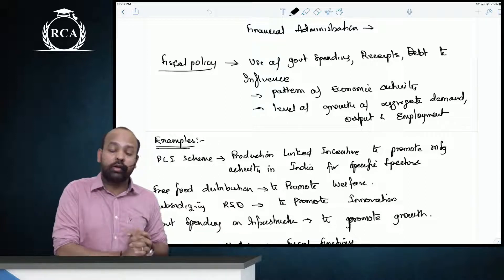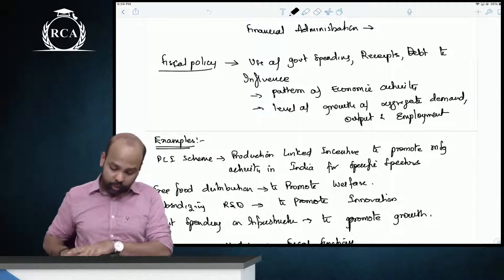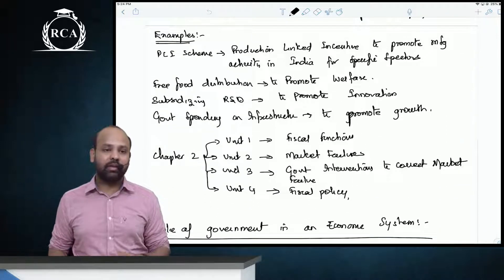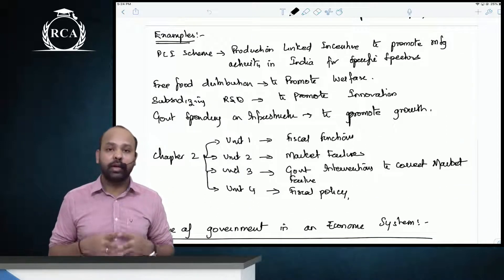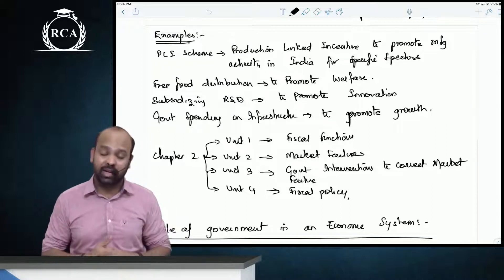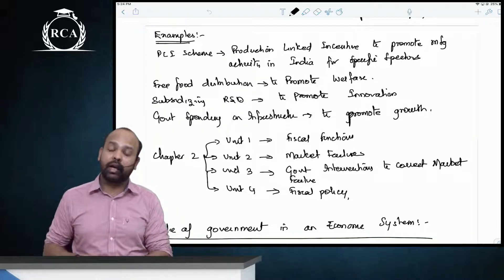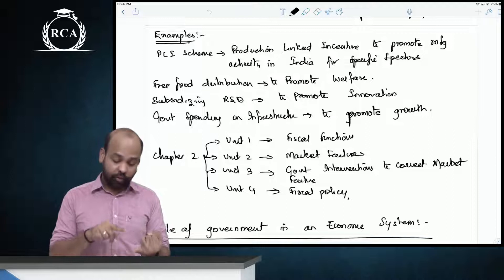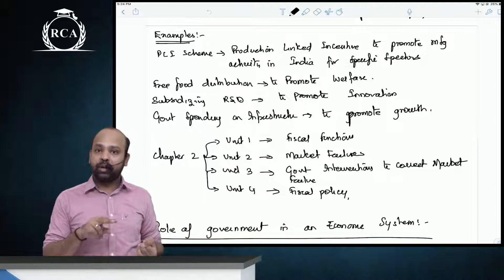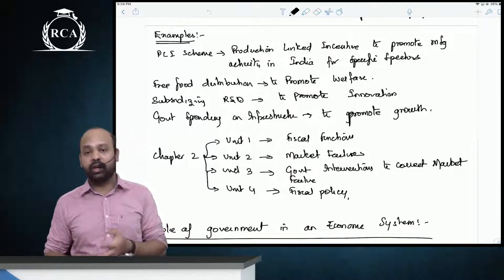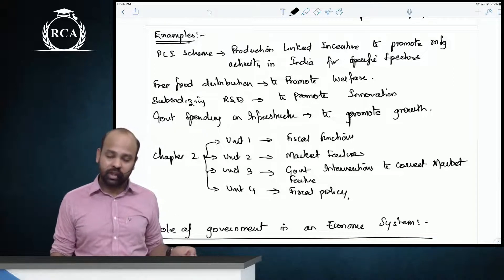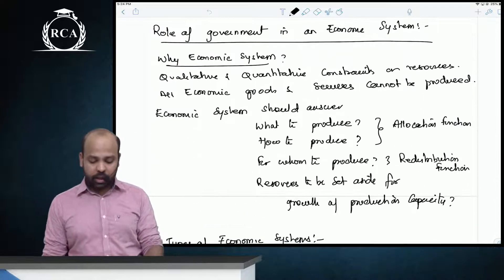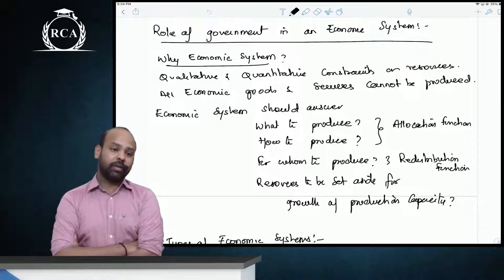Fiscal policy is used to influence the pattern of economic activity and the overall level of aggregate demand, output, and employment in a country. Examples include the Production Linked Incentive scheme, subsidized food, subsidized electricity, subsidized and free housing, free health and education, collateral-free loans, and credit guarantee schemes — all done to improve the overall level of economic activity.